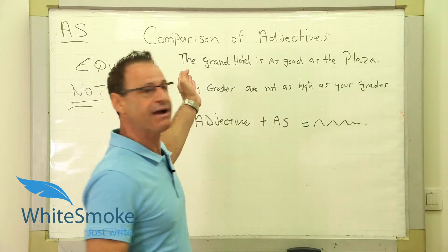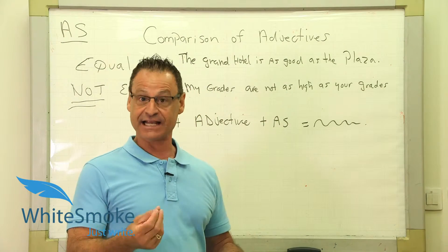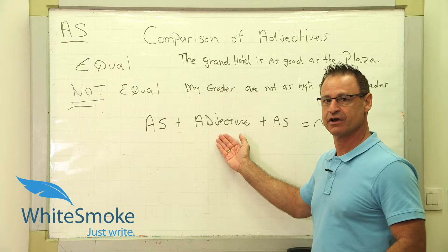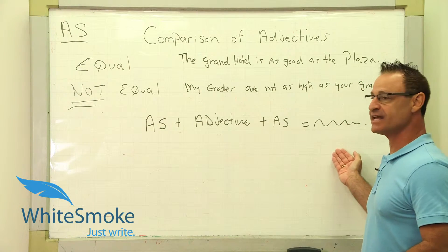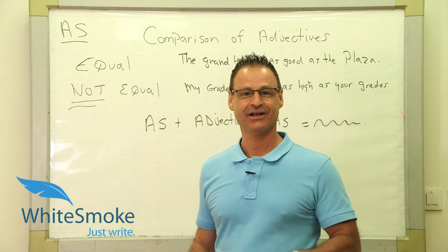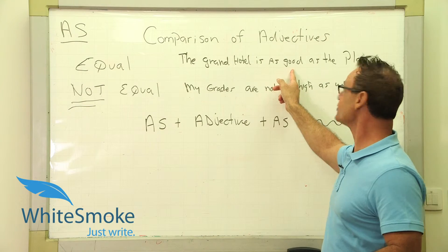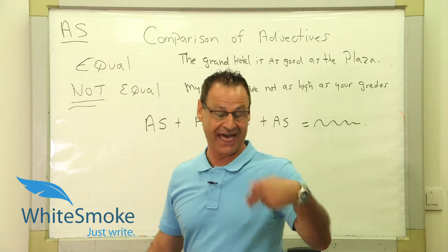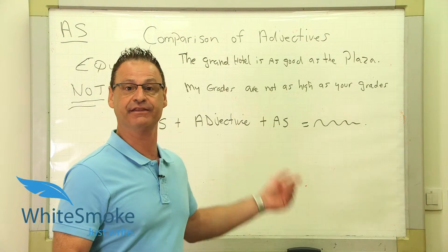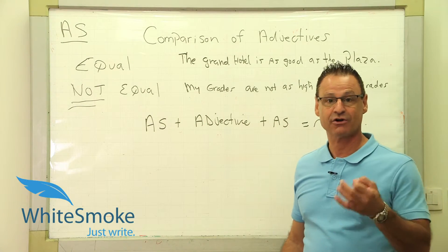This is part one of comparisons of adjectives. If I want to compare two things by using the word 'as,' let's take the mathematics I just taught you: as + adjective + as equals the rest of the sentence. For example, 'The Grand Hotel is as good as the Plaza Hotel.' So we have 'as' plus your adjective plus 'as' — a prime example in the positive, meaning equal.